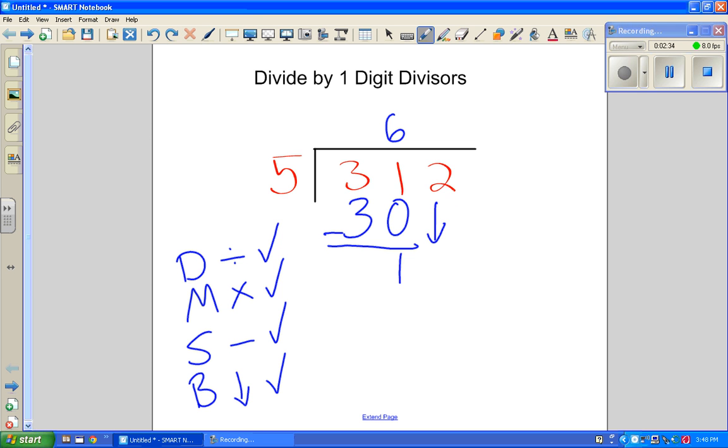We bring down the next number. So now it's a 2. At this point, we are going to start all over with our steps. And we're going to divide. 5 goes into 12. Well, we know 5 goes in there. 5, 10. If we go to 15, it's too much. So 10 is what we're going to do. 5 times 2 is 10. So first, we do our 2 up here. That's our answer. That's our divide. 5 went into 12 two times.